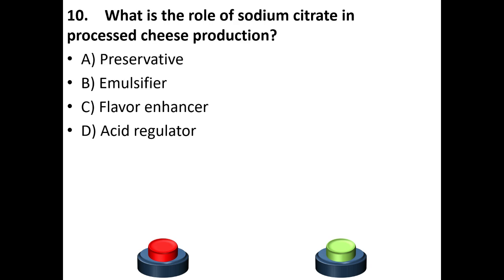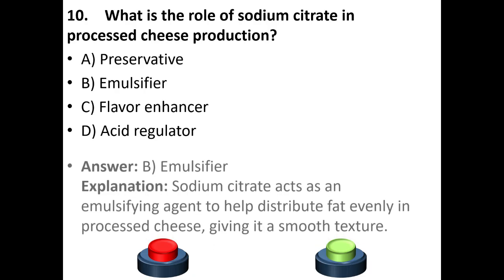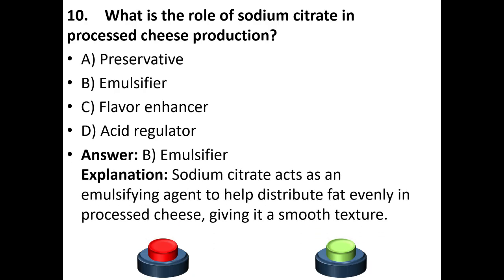Tenth question: What is the role of sodium citrate in processed cheese production? A. Preservative, B. Emulsifier, C. Flavor enhancer, D. Acid regulator. The answer is B — Emulsifier. Sodium citrate acts as an emulsifying agent to help distribute fat evenly in processed cheese, giving it a smooth texture.